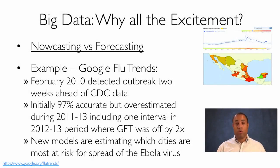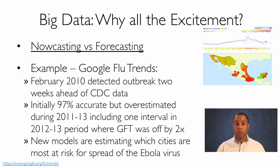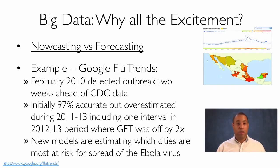Let's look at several examples of why there's so much excitement around working with big data. The first is nowcasting. Traditionally, people have done forecasting — you collect data, build a model, and use it to predict the future. With nowcasting, you collect a lot of data and build a model, but instead you use it to predict what's happening now. The example we're going to use is Google Flu Trends.